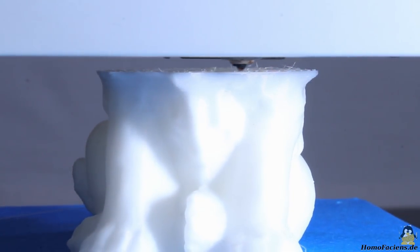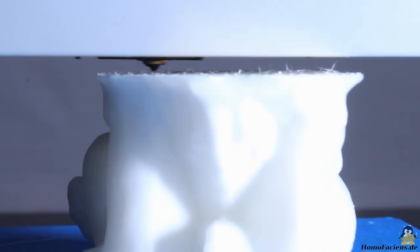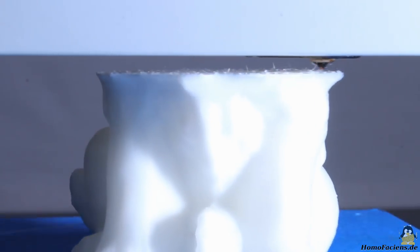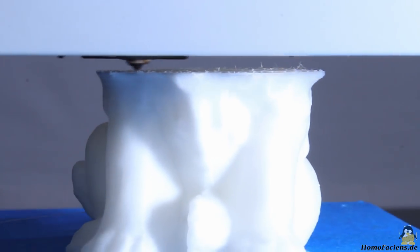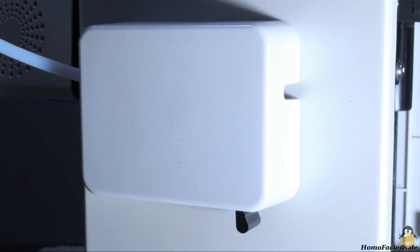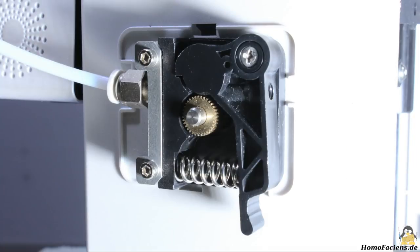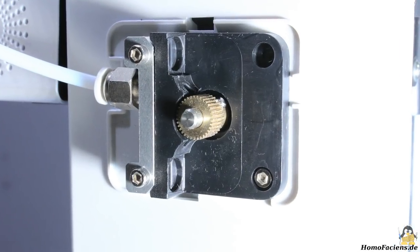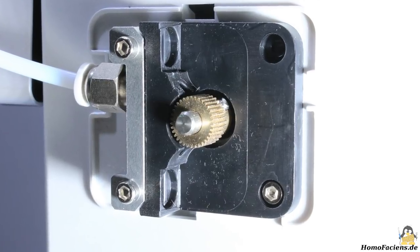The second functionality that is advertised is a filament sensor. That's what I wanted to demonstrate next, however the printer did not pause the job when running out of filament. When having a close look at the extruder motor, I could not see a switch and there is obviously no place for such a sensor, that's why it can't work.